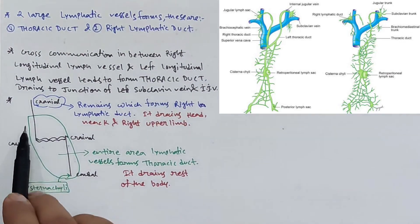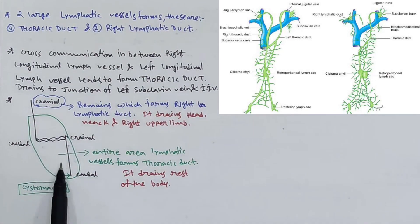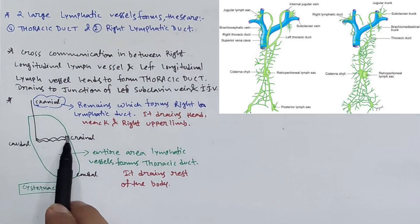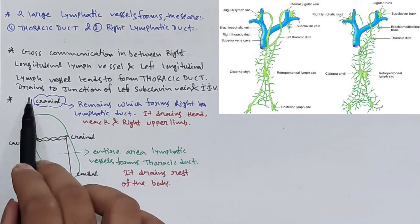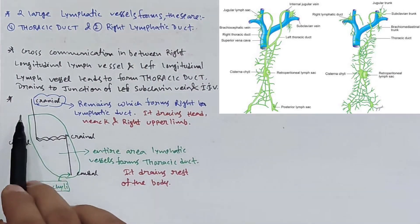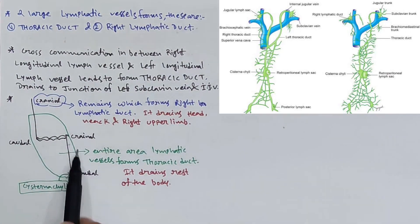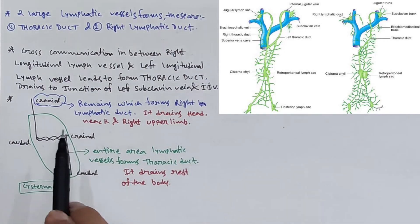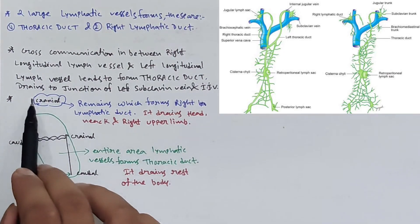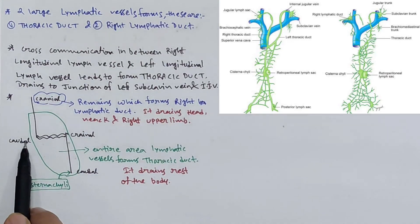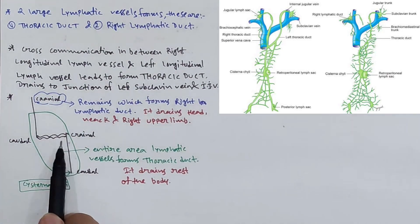In this photo, suppose this is a longitudinal lymph vessel and this is another longitudinal lymph vessel. In between we are getting the cross connection. This one is known as right longitudinal lymph vessel and this one is known as left longitudinal lymph vessel.